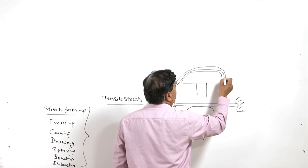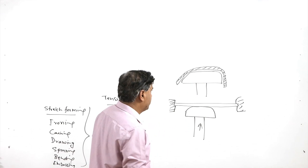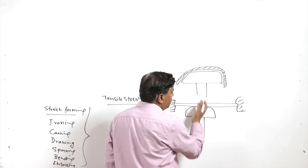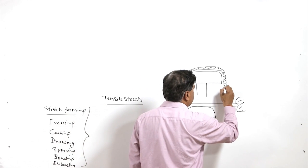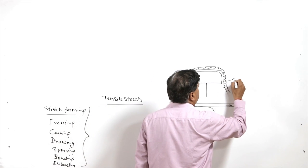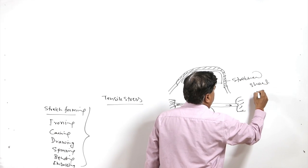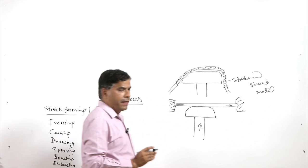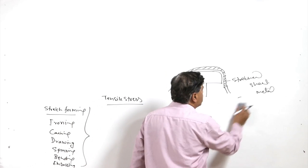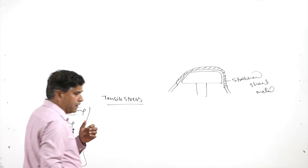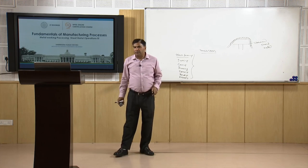The shape of the form block decides the shape which will be achieved by the sheet. When it is pushed through the sheet metal, the sheet metal is stretched. The stretched sheet metal experiences tensile stresses, and a suitable contour in the sheet metal is produced through the development of these tensile stresses.